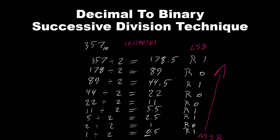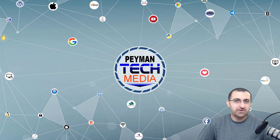So when we have our decimal value, we just need to divide it by 2 and then find the remainder. You probably noticed: when the value is an odd number, the remainder is 1; when the value is even, the remainder is 0. When we get to 0, we stop and write down the remainders from bottom to top. These are our binary numbers for this decimal value. This was an example of converting a decimal number to a binary number using the successive division technique. And this was a quick overview of different ways to convert a decimal number to a binary number.